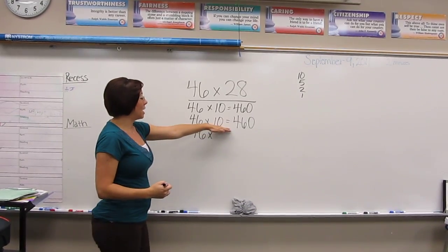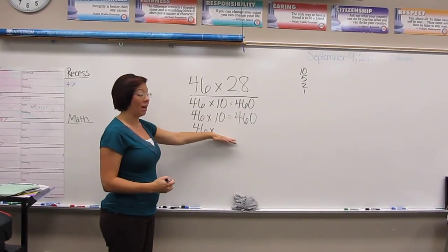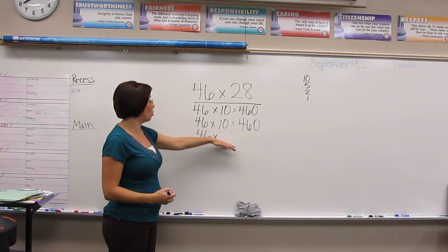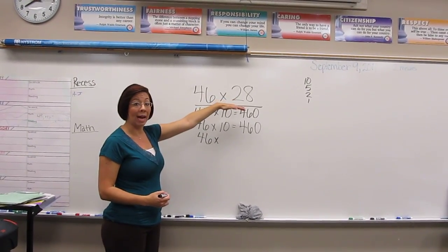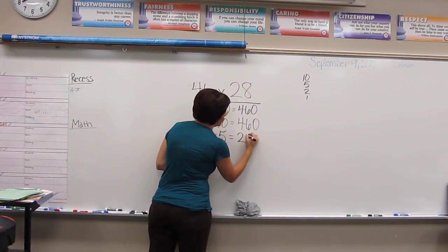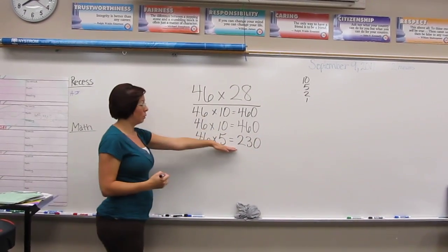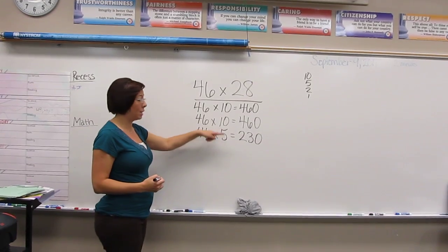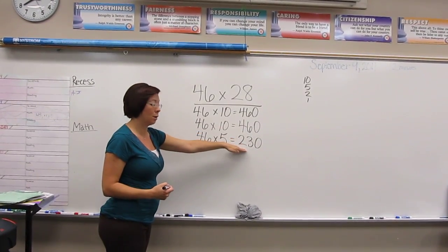Now I can tell that I don't have enough for another 10. If I do another 10, then that'll be 46 times 30, which is too high. So I'll do 46 times 5, which gives me 230. If I reduce this number by half, then I reduce this number by half as well.